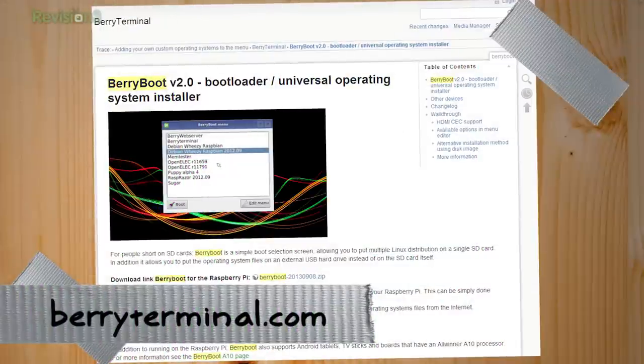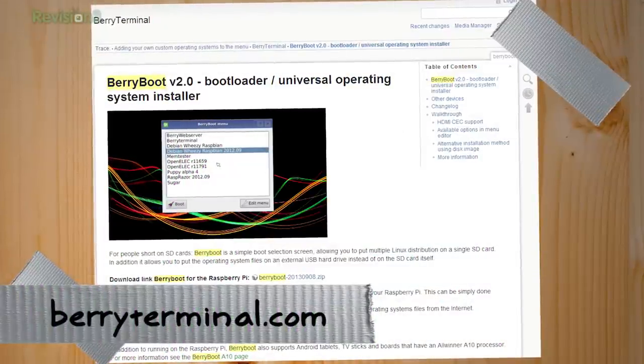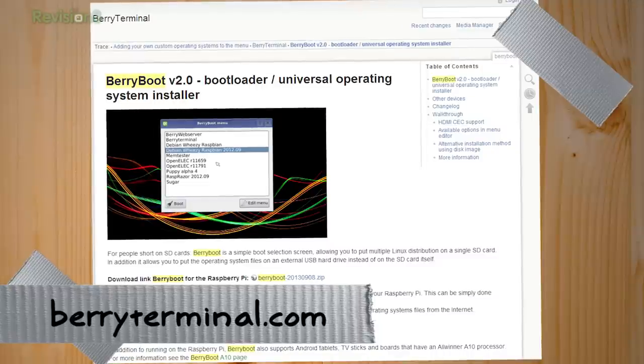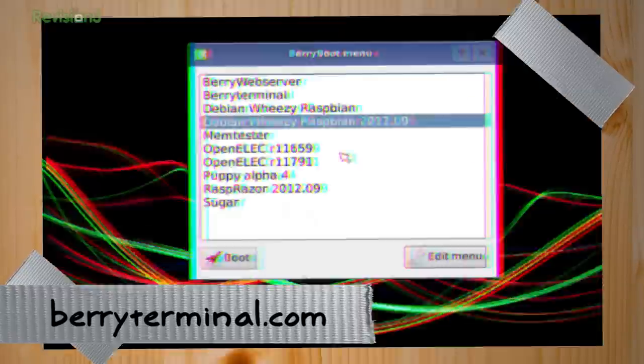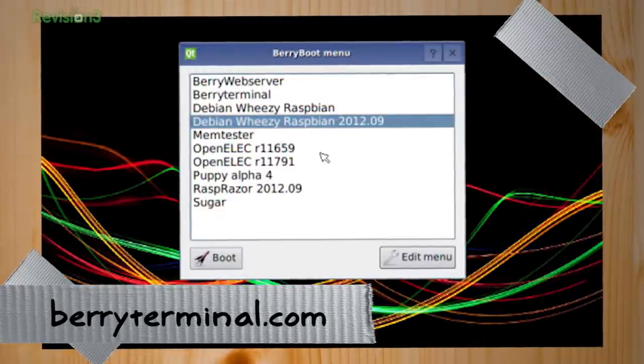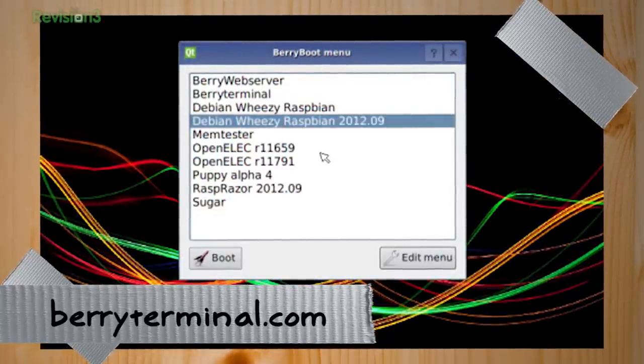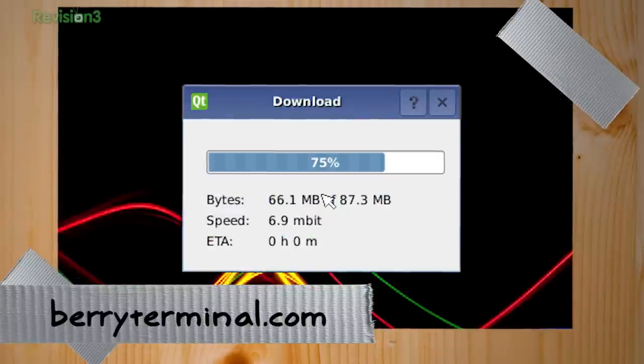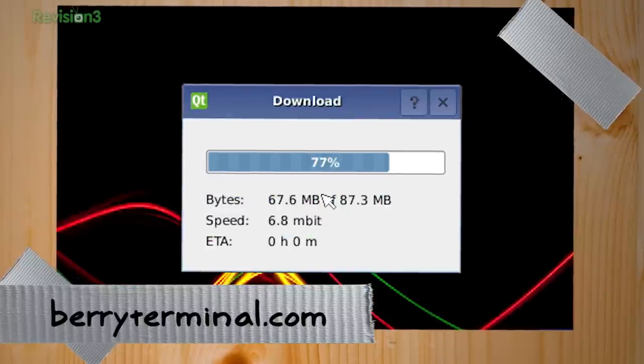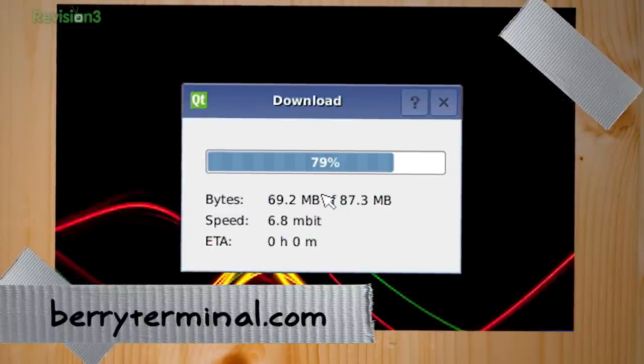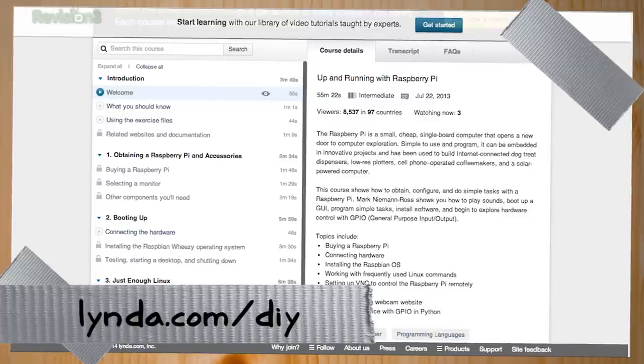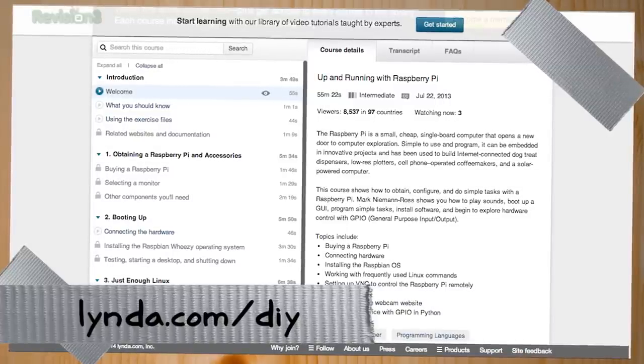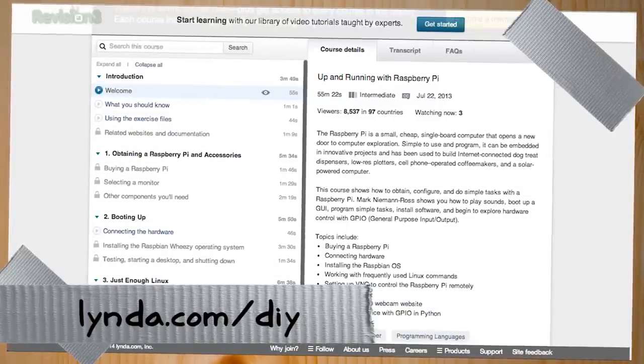In this case, we're going to keep it simple and use a thing called BerryBoot, which is a very easy way to do multiple distributions so you can try them out. But we're going to use that to install OpenELEC, which is a kind of a XBMC distribution. BerryBoot will download, install everything for you. It's very easy. But if you want to get more in depth with Raspberry Pi stuff, our sponsor lynda.com actually has some Raspberry Pi courses, lynda.com/diy, please check them out.